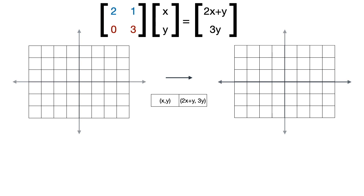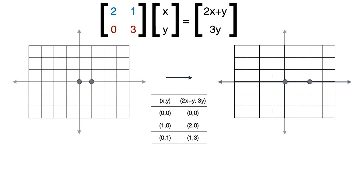One of the vertices of the square is the point 0, 0, which goes to the point 0, 0 — this always happens because 2 times 0 plus 0 equals 0 and 3 times 0 equals 0. The point with coordinates 1, 0 goes to the point 2, 0. The point 0, 1 goes to 1, 3. And the point 1, 1 goes to 3, 3. We conclude that this small square goes to this larger parallelogram.